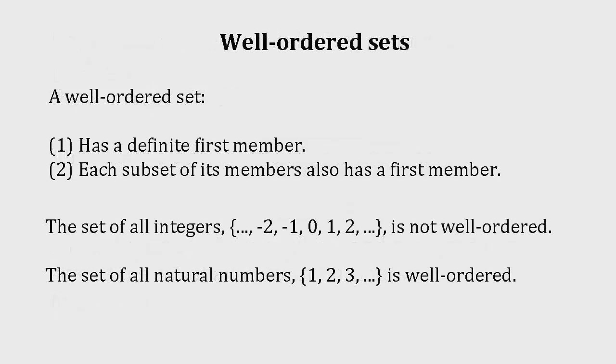For finite sets, there's not much difference between the size of a set given by a cardinal number and its length given by an ordinal number. But in the case of infinite sets, there's a big difference. To understand this, we need to know about well-ordered sets. A set is well-ordered if it satisfies two conditions. First, it has a definite first member, and second, each subset of its members also has a first member.